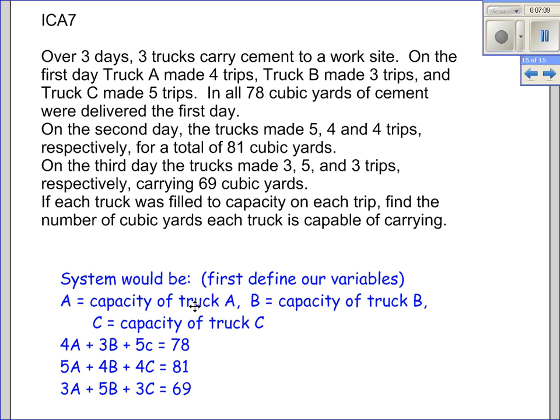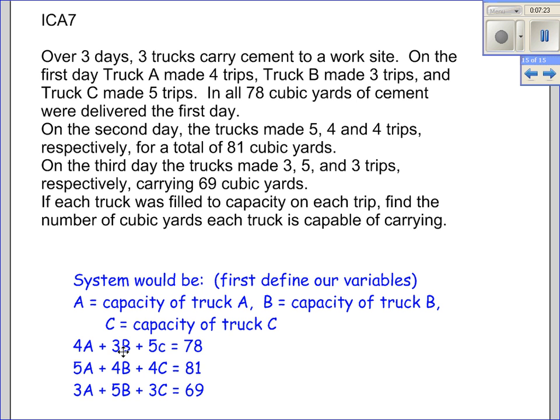If each truck was filled to capacity on each trip, find the number of cubic yards each truck is capable of carrying. So that's what we're trying to find: how much capacity is in each truck? So my variables are A, the capacity for truck A, B the capacity for truck B, and C the capacity of truck C. And really this is the same thing as the marigold problem. 4 trips for truck A plus 3 trips for truck B plus 5 trips for truck C gave us 78 cubic yards of cement at our work site. There's day one right there, gives us one equation.